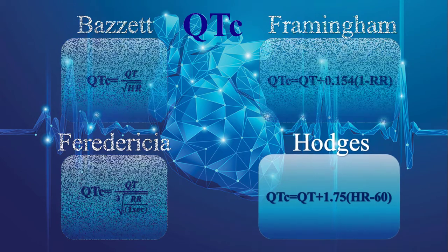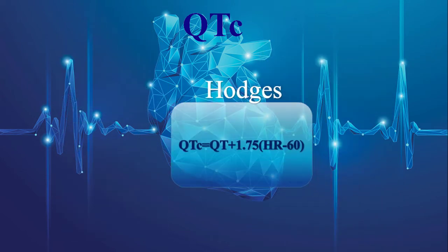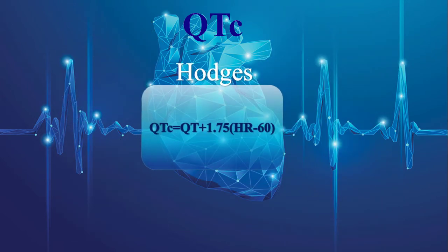Among all these equations, I personally prefer Hodges formula because of its convenience. Note that in Hodges formula, the QT interval should be calculated in milliseconds.